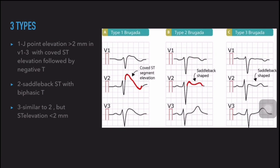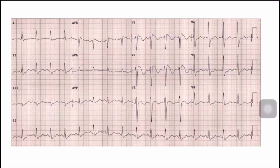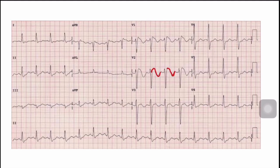The most important pattern is the Type 1 pattern. Don't ever miss this Type 1 pattern when a patient presents with syncope. In this ECG, we can see in leads V1 to V3 there is a coved ST segment elevation with a negative T-wave — this is a Type 1 Brugada pattern.